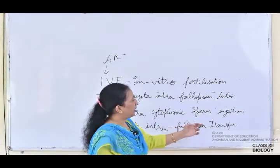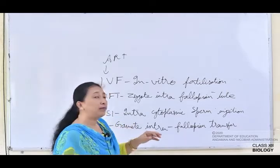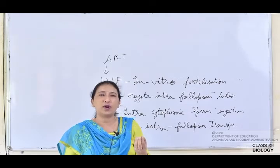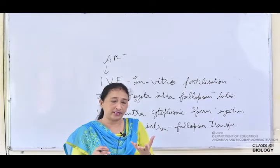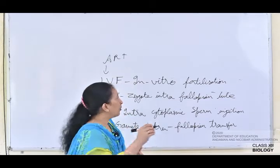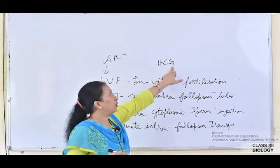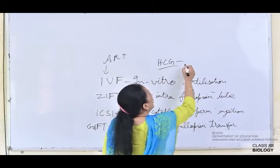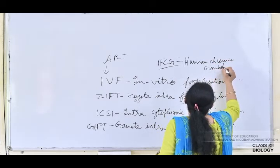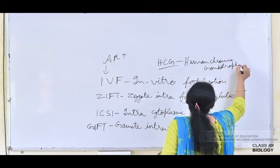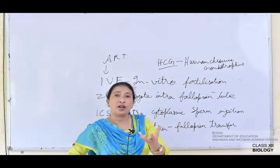GIFT — Gamete Intra Fallopian Transfer — is used when some females have very little ova. In foreign countries, younger women are donating their ova. There is a hormone called HCG — Human Chorionic Gonadotrophin — which stimulates the ovaries to produce more eggs.